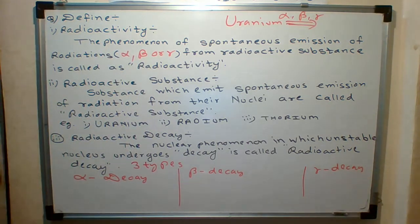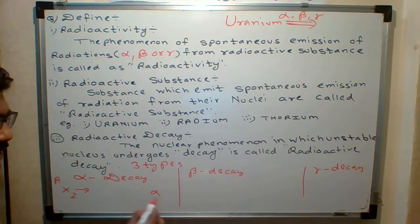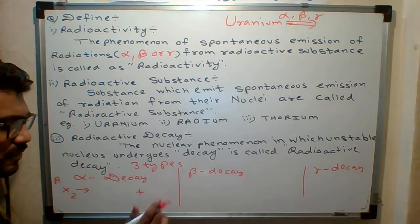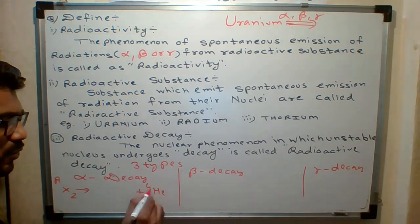Alpha decay. So students, let us take one example. If X is a parent element having atomic mass number A, atomic number Z. If alpha particle is radiated, alpha means helium-4-2.